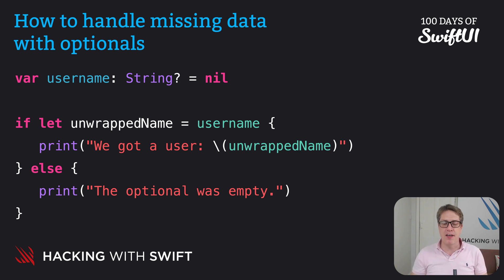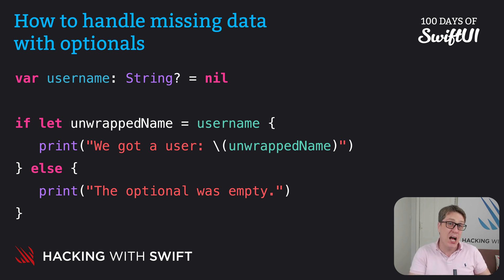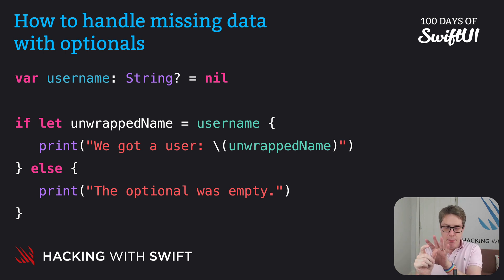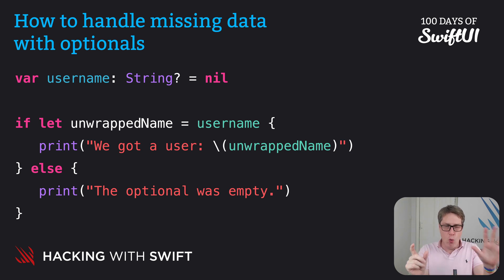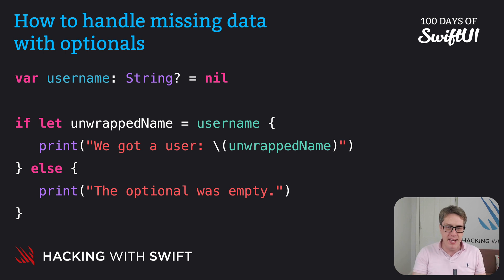Now this might seem rather academic so far, but optionals are critical as a tool for helping us write better software. In the same way optionals mean data might be there or might not be there, it also means that all the non-optionals — regular strings, integers, booleans, and so forth — mean data must be there. Must be. It has to have a value.